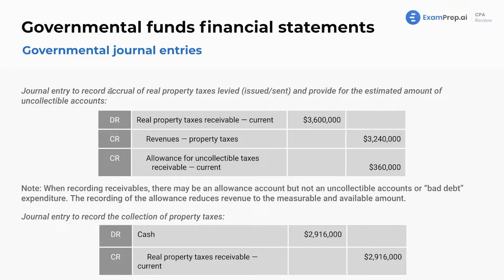The journal entry to record the accrual of real property taxes — real meaning like real estate — real property taxes levied. Taxes levied is essentially like sending a purchase order or an invoice; this is when you, as the government, tell the citizens they owe the money. So when they're levied, when it's announced, when they're given the bill, you debit property tax receivable, just like accounts receivable, and you credit revenues if you completed your end of the bargain. Just like in corporate accounting, revenue is the credit.